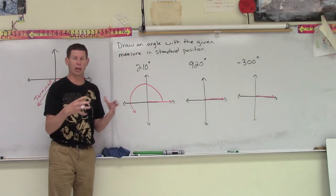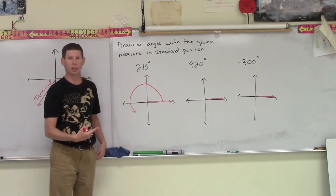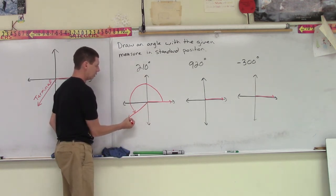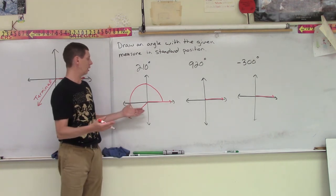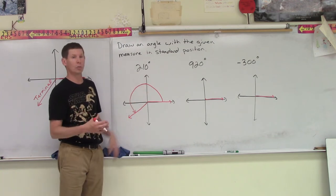And we can put a little arrow on that arc indicating that we have rotated in that positive direction. Now, once we get there, we can put our terminal side, or the second side of our angle in. And that's all you're looking to do to show that you rotated, in this case, 210 degrees.